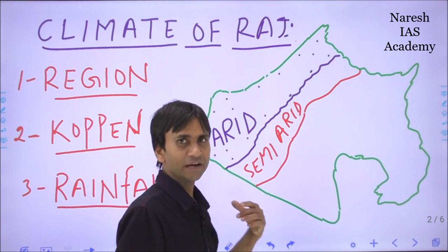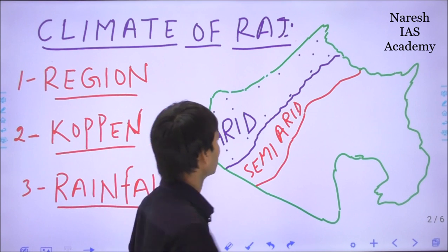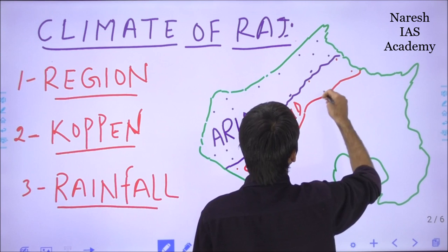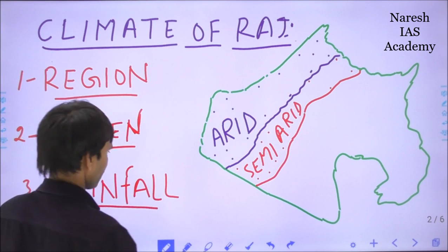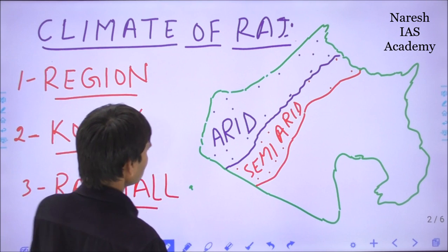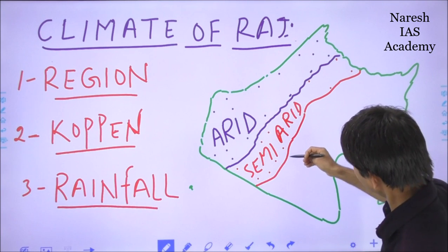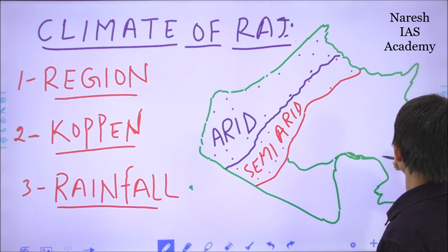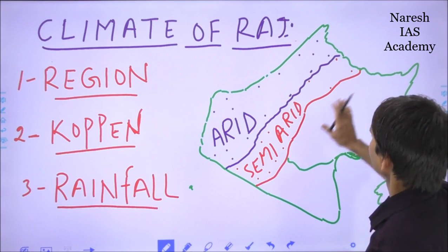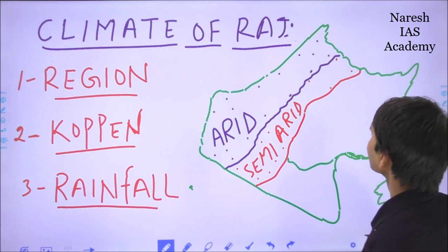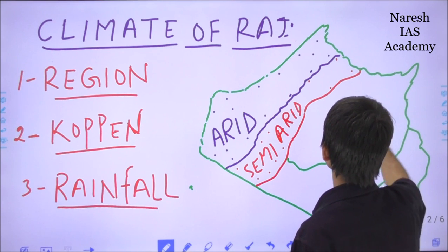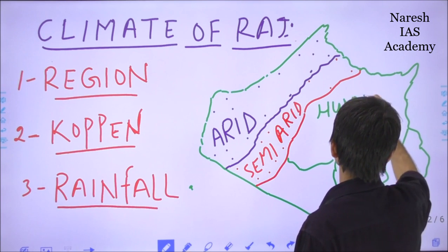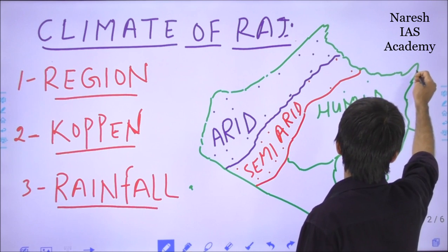The Aravalli mountain range has semi-arid climatic conditions. The third region covers the eastern plains of Rajasthan and is called the humid, also referred to as the subhumid, climatic region.